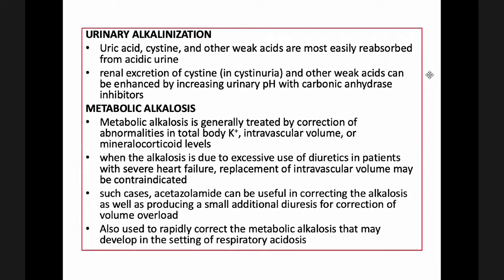Metabolic alkalosis is generally treated by correction of abnormalities in total body potassium, vascular volume, or mineralocorticoid levels. When alkalosis is due to excessive use of diuretics, especially in patients with severe heart failure, replacement of intravascular volume may be contraindicated. In such cases, acetazolamide can be useful in correcting the alkalosis as well as producing a small additional diuresis for correction of volume overload. It is also used to rapidly correct metabolic alkalosis that may develop in the setting of respiratory acidosis.